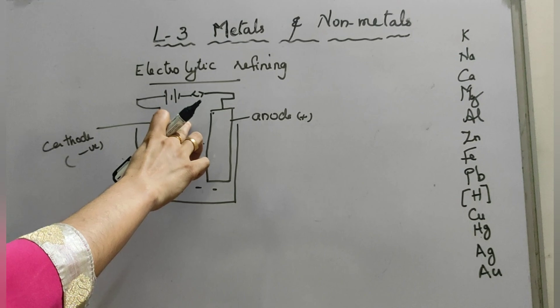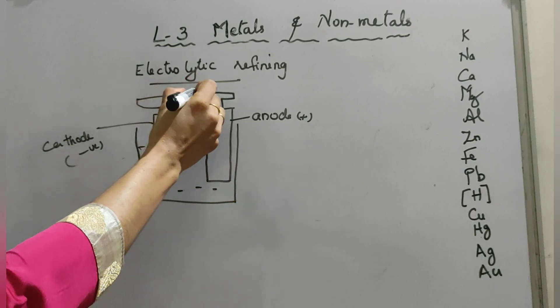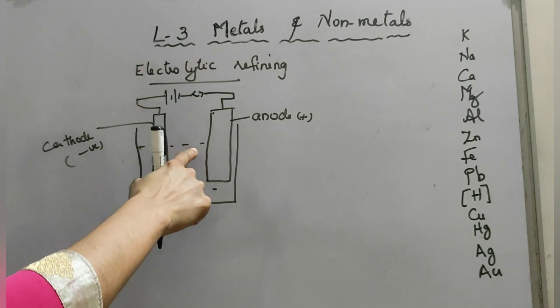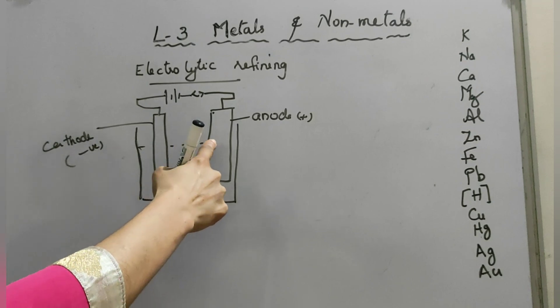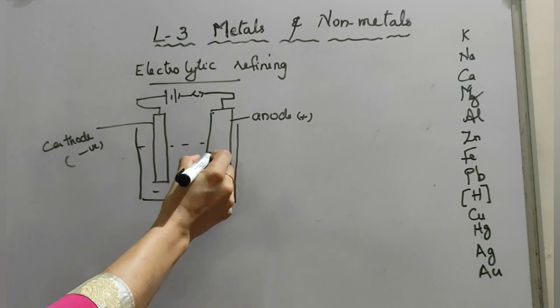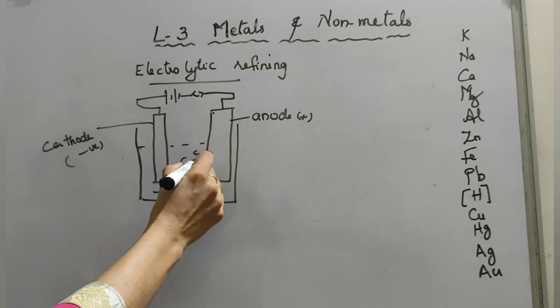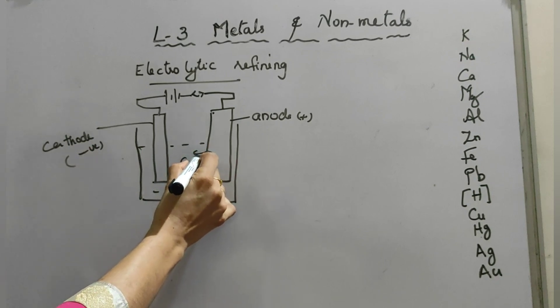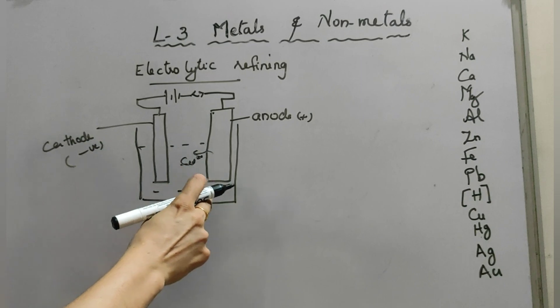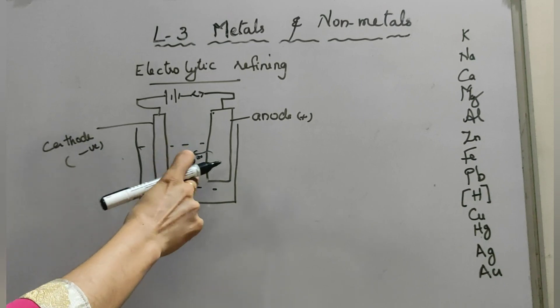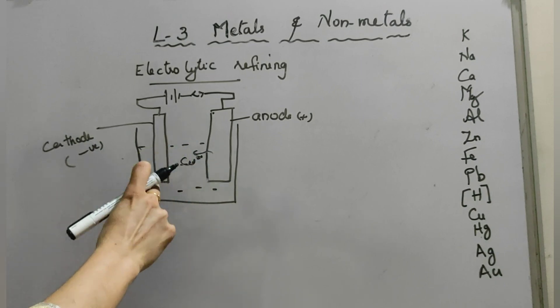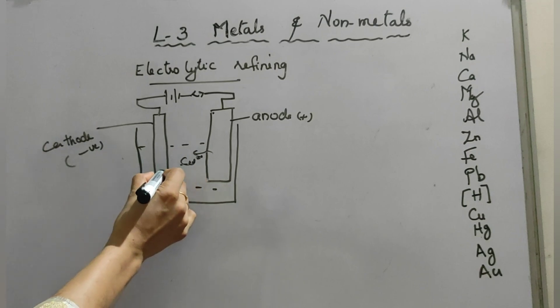On passing the current through this electrolyte, when we press the key, on passing the current, the pure metal from the anode dissolves in the electrolyte. This pure metal is dissolved. Here we are taking copper sulfate, so copper dissolves in the electrolyte and an equivalent amount of this pure metal from the electrolyte is deposited at the cathode.